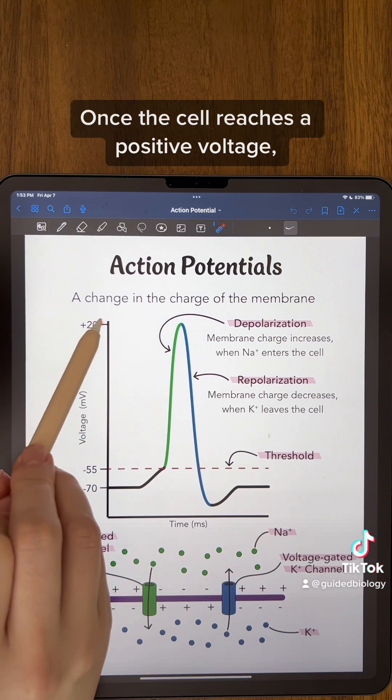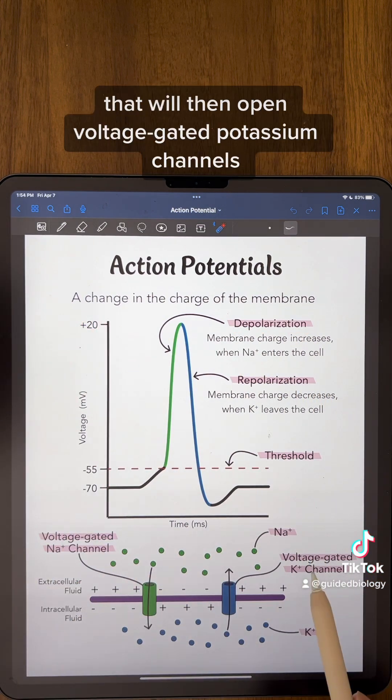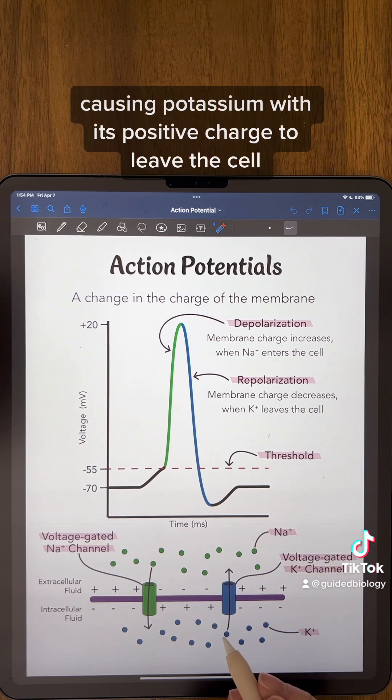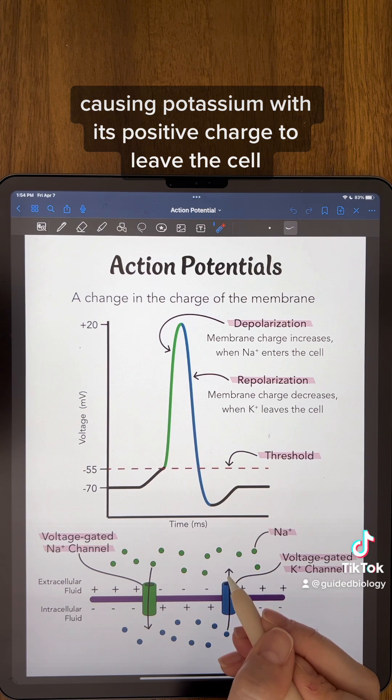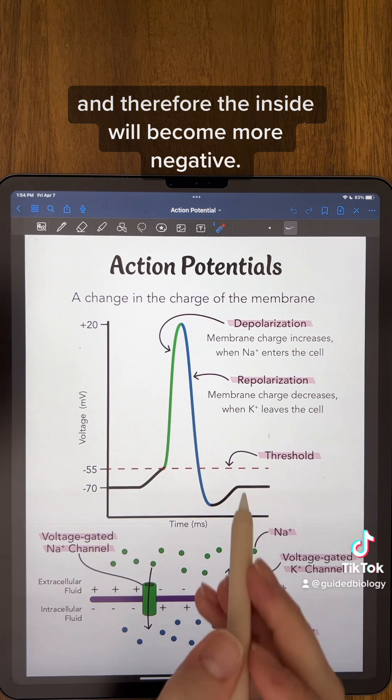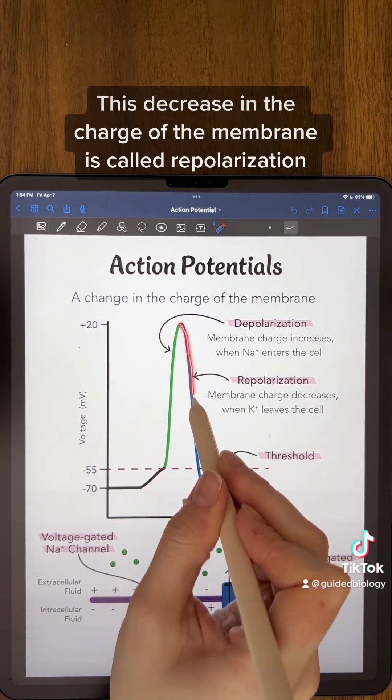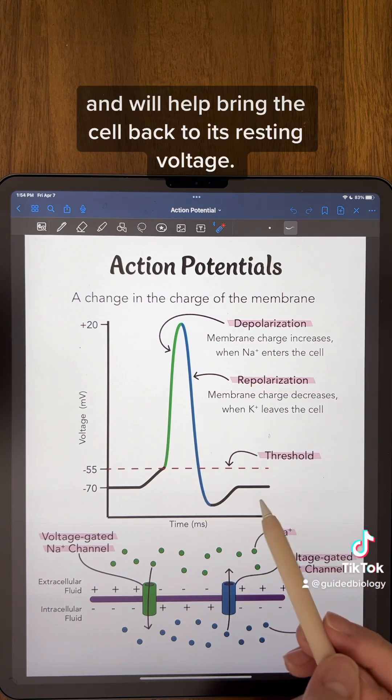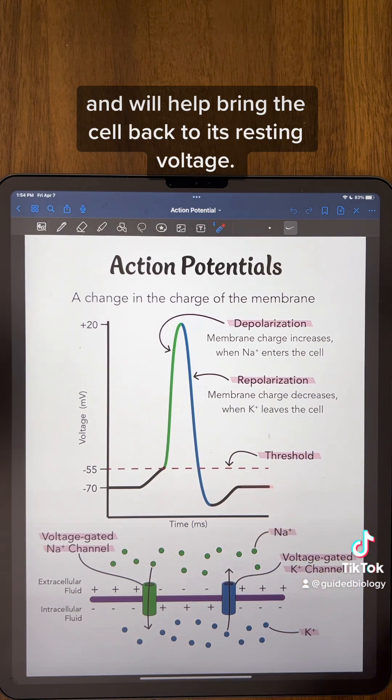Once the cell reaches a positive voltage, that will then open voltage-gated potassium channels, causing potassium with its positive charge to leave the cell, and therefore the inside will become more negative. This decrease in the charge of the membrane is called repolarization, and will help bring the cell back to its resting voltage.